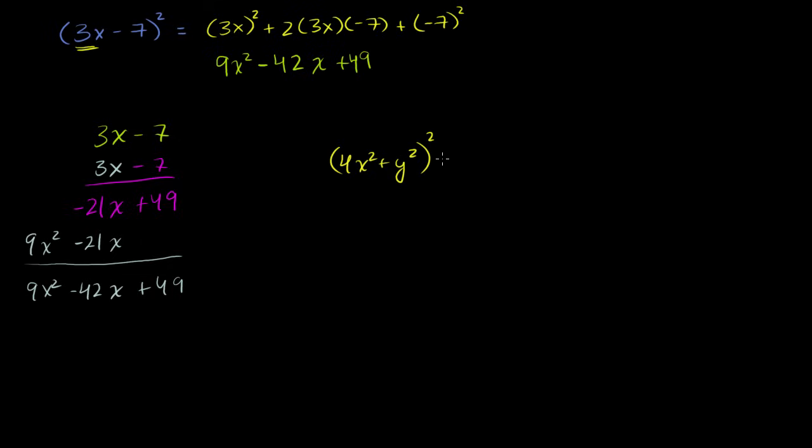This is going to be equal to this term squared, 4x squared squared, plus 2 times the product of both terms. 2 times 4x squared times y squared plus y squared, this term squared. And what's this going to be equal to? This is going to be equal to 16, right? 4 squared is 16.